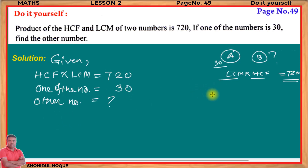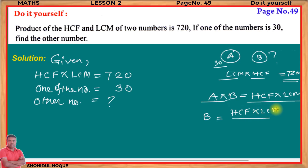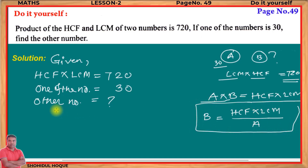Now, to solve this problem, there is a formula we know: a × b — that is, the product of the two numbers — equals HCF × LCM. So, if we multiply the two numbers, it equals the product of HCF and LCM. From this, b = (HCF × LCM) ÷ a.